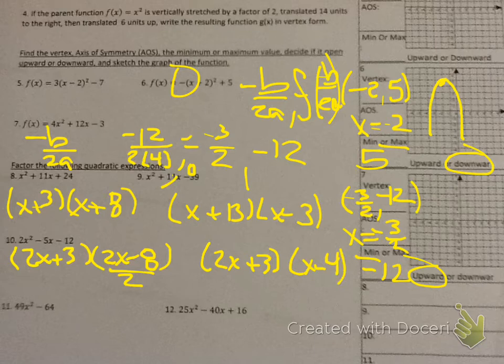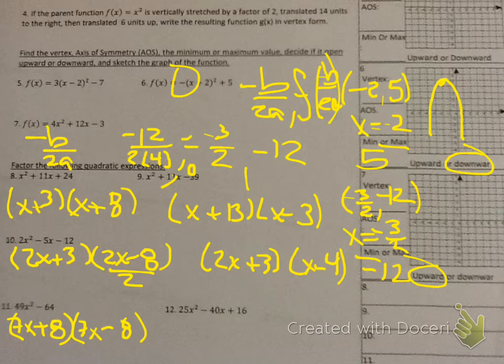Number 11 is the difference of two squares — put plus and minus in the parentheses. What's the square root of 49? What's the square root of 64? There you go, you're done. Number 12 is a perfect square trinomial — parentheses squared, sign in the middle. Square root of 25 is 5, square root of 16 is 4. So you get (5x − 4) squared.